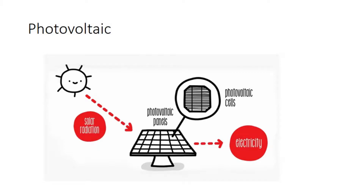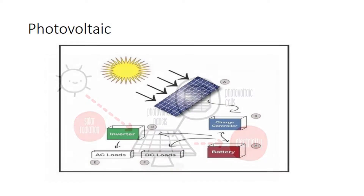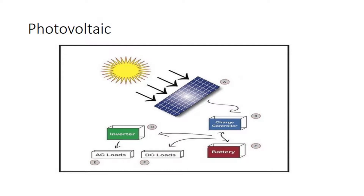Photovoltaics are best known as a method for generating electric power by using solar cells to convert energy from the sun into a flow of electrons by the photovoltaic effect. Solar cells produce direct current electricity from sunlight, which can be used to power equipment or to recharge a battery.